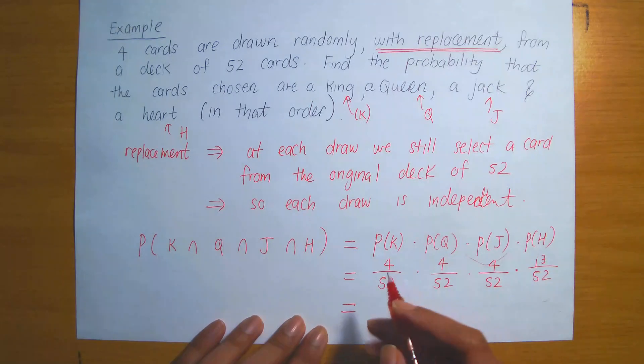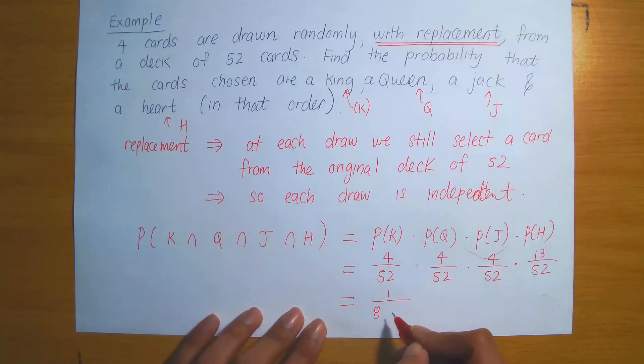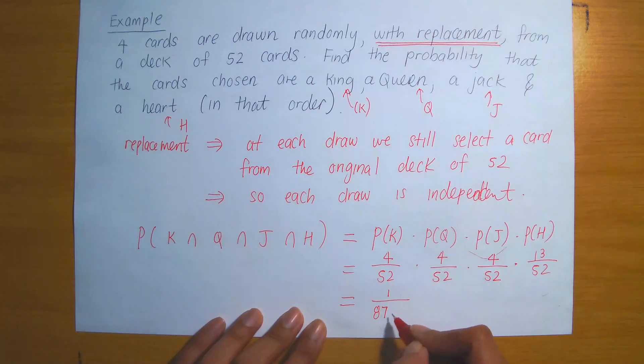And then multiplying this, you could put this into your calculator and simplify, and you will get a final answer of 1 divided by 8,788.